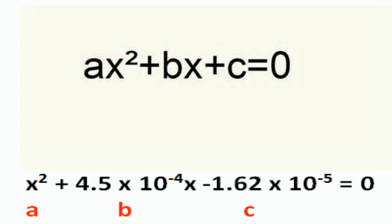From the quadratic equation, we insert the data into the quadratic formula, where A equals 1, B equals 4.5 times 10 to the minus 4, and C equals negative 1.62 times 10 to the minus 5.